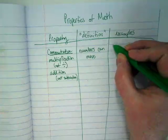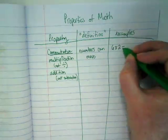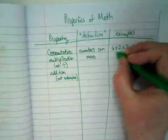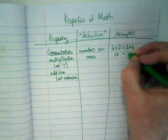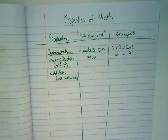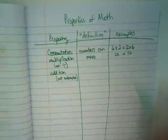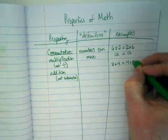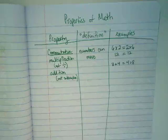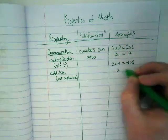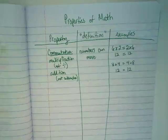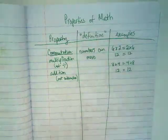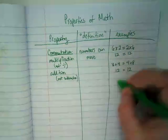An example we could do is 6×2 equals the same thing as 2×6. They both equal 12, so 12 equals 12. It also works with addition: 8+4 equals 4+8. That's 12 again. Just to be clear, this works on things that don't equal 12 - it works on anything we multiply and anything we add.